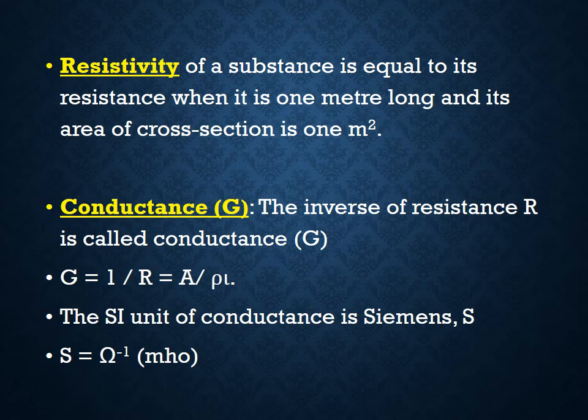Resistivity of a substance is equal to its resistance when it is 1 meter long and its area of cross-section is 1 meter square. Conductance G: the inverse of resistance R is called conductance. G is equal to 1 by R, or G is equal to A by rho L. The SI unit of conductance is Siemens, which is equal to Ohm inverse.